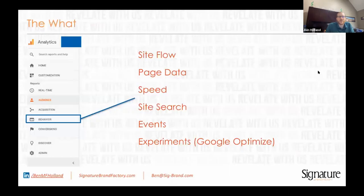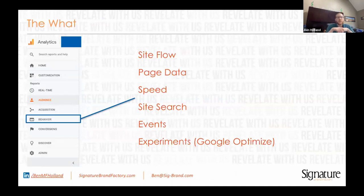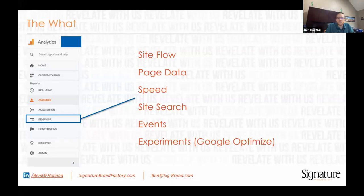The next section is the behavior section. Here, you can learn about the site flow, page-specific data, your site speed. Site search here is what people are actually searching for on your website — not what they're searching for on Google. You can learn about the events you implement on your website, and if you're doing any experiments with Google Optimize, you can see that data here.